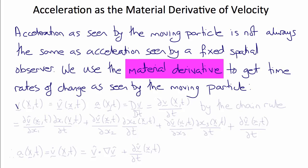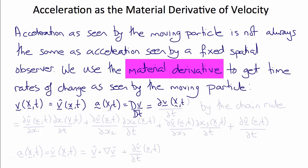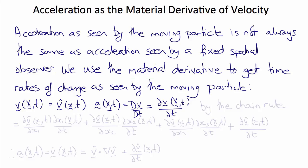For example, the material velocity would be v as a function of big X and t, and its spatial equivalent would be v-hat of little x and t. The material description of the acceleration vector, a of big X and t, is the material derivative of the velocity vector, big D v big D t, which is the partial derivative of v of big X and t with respect to t.